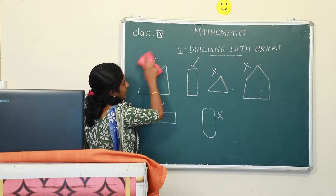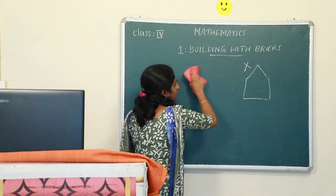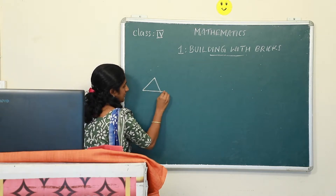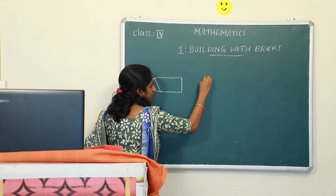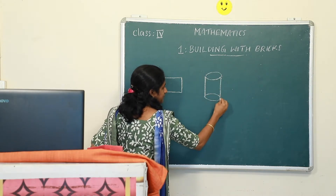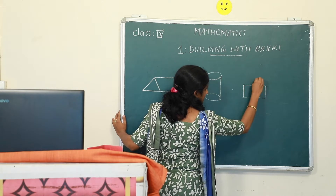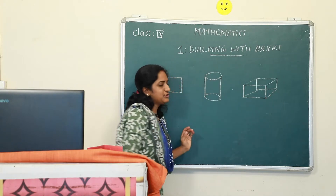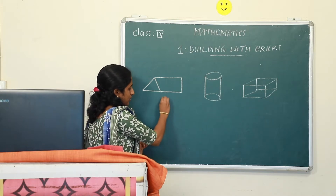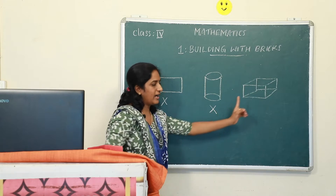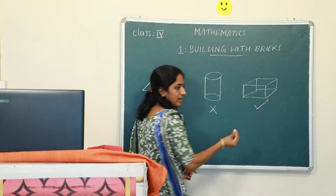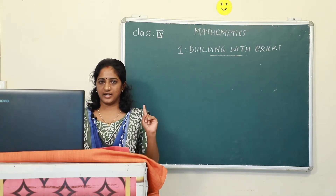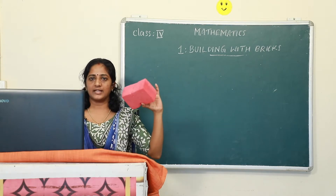Do you understand? Now I am going to draw some other pictures and you have to tell me which shape looks like a brick. 1, 2, and 3. Which one looks like a brick? The first one — no. The second one — no. The third one — yes, this looks like a brick. So we have seen many brick patterns, how many faces a brick has, and the shape of a brick.